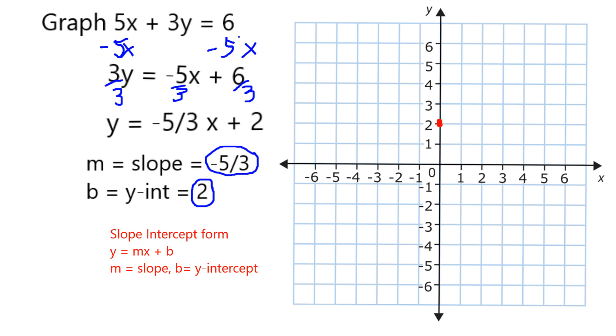So starting with the point I already have, I'm going to go down 1, 2, 3, 4, 5, and over 1, 2, 3. And there I'll put my next point.